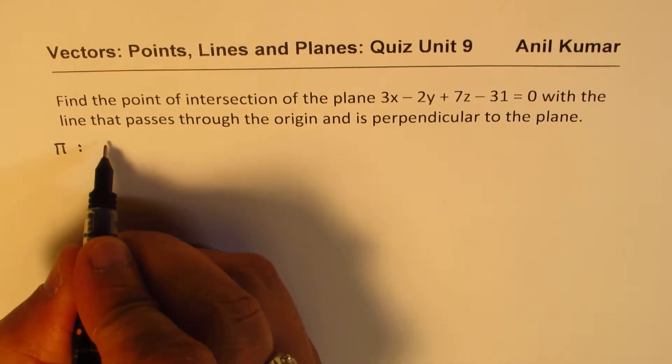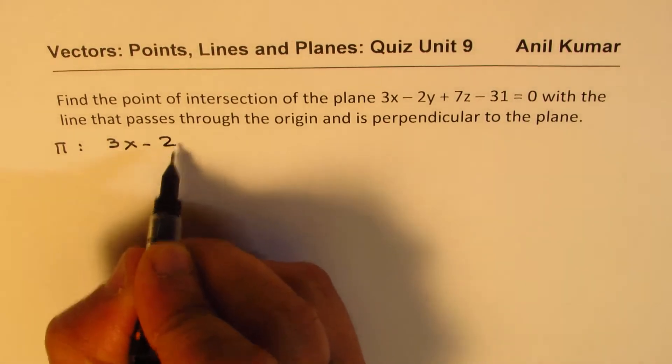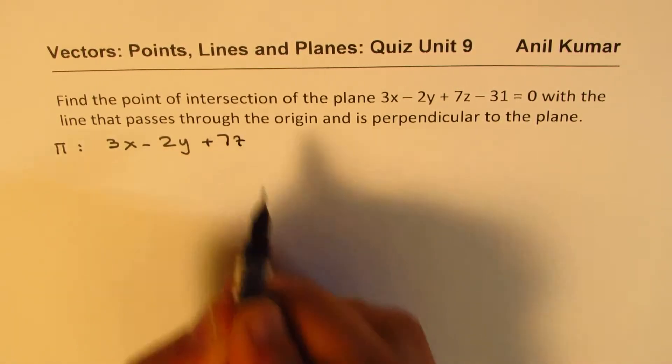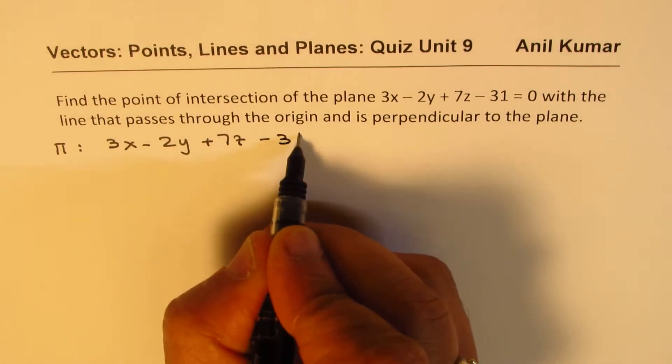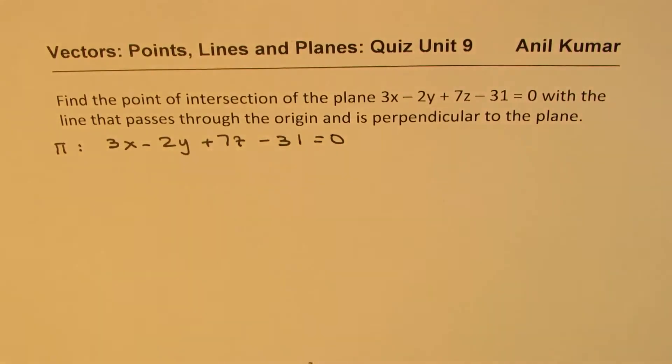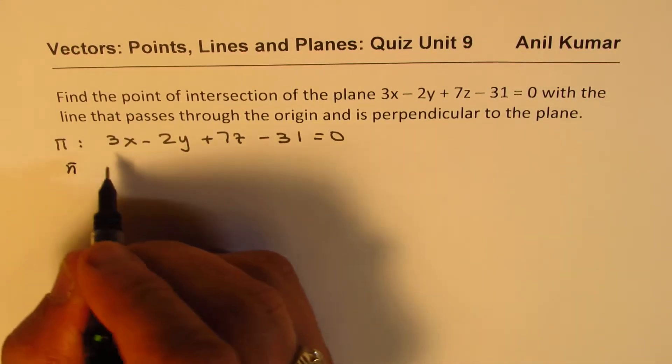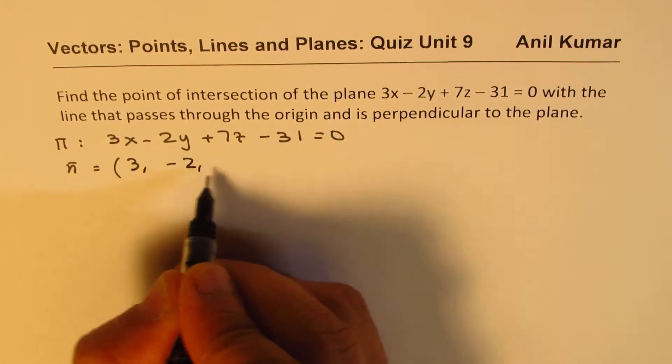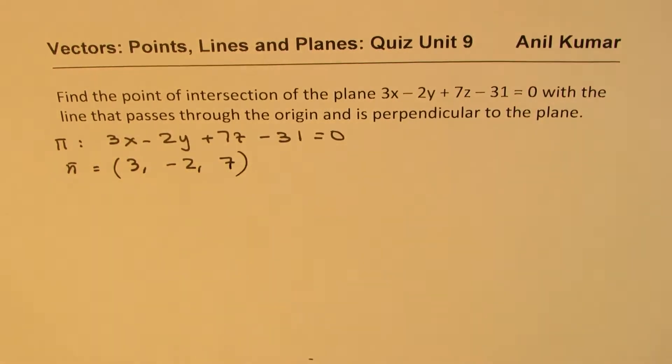So we are given the plane, which is 3x minus 2y plus 7z minus 31 equals to 0. So what is the normal to the plane? The normal to the plane is (3, -2, 7). So that is the normal to the plane.